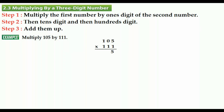Let's multiply: 1 times 5 is equal to 5, then 1 times 0 is equal to 0, then 1 times 1 is equal to 1. Now we are going to continue with the second step — multiply the first number by the tens digit of the second number.